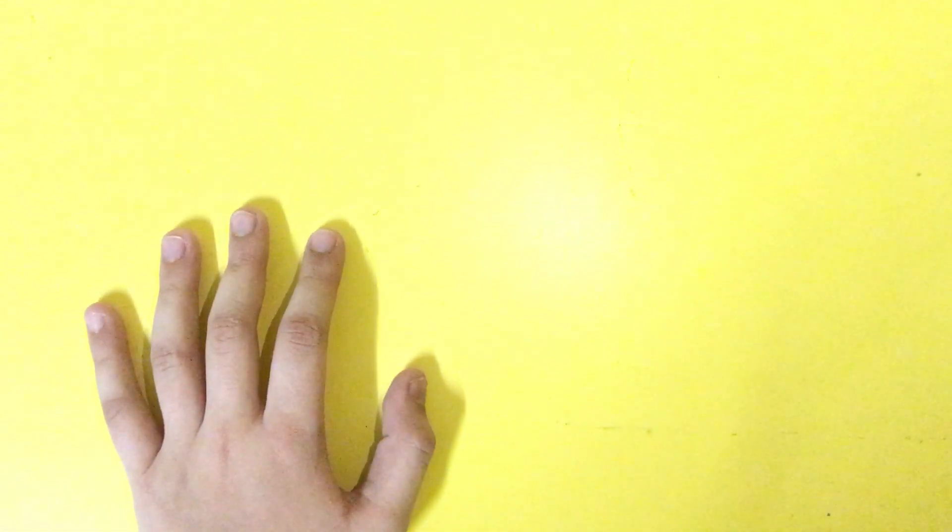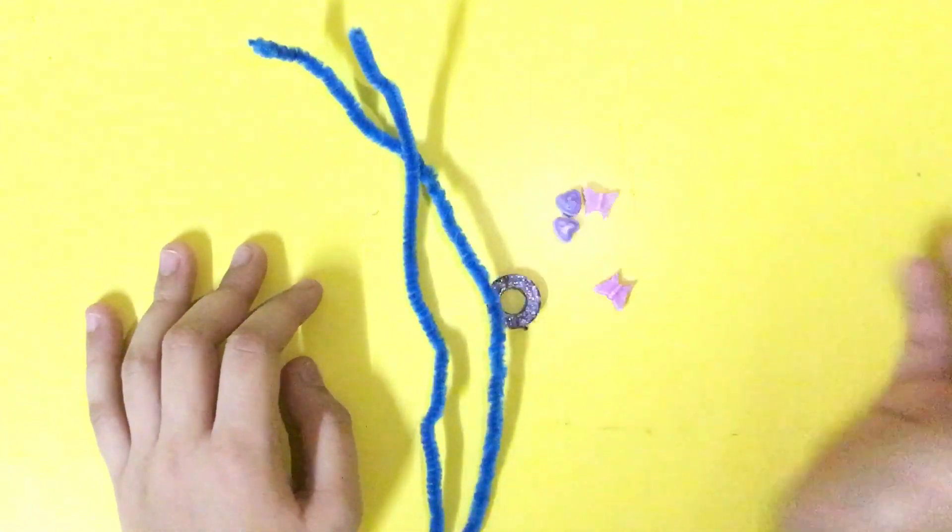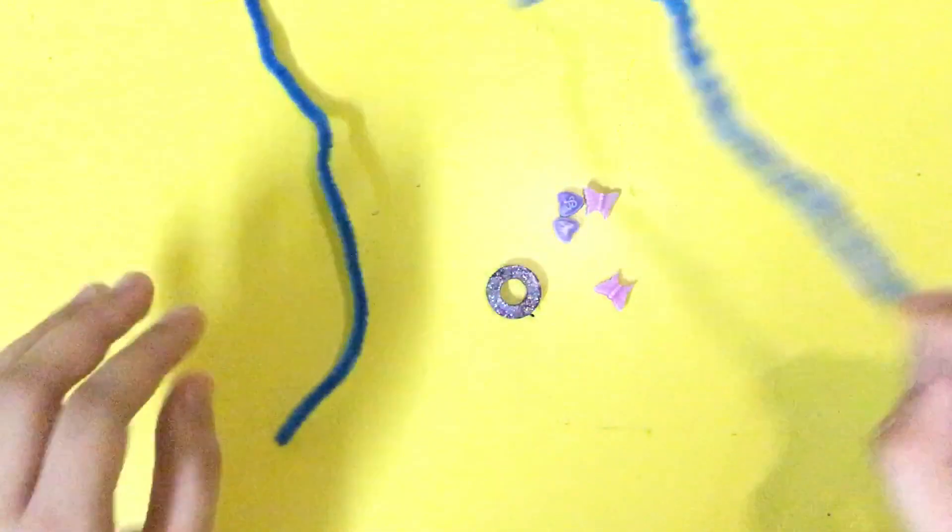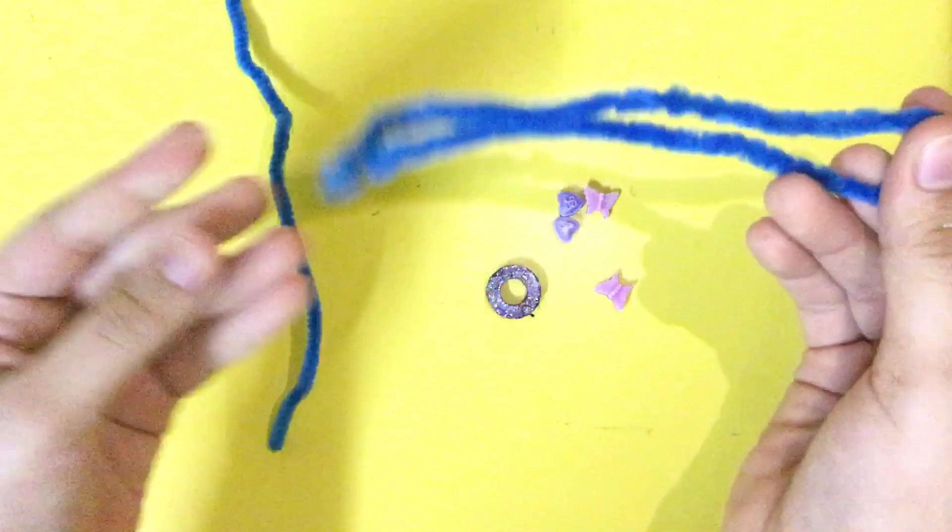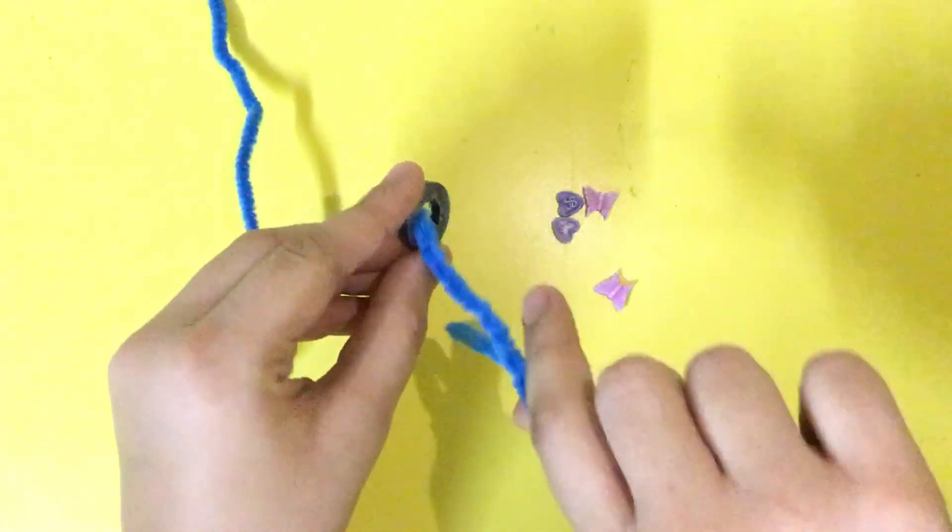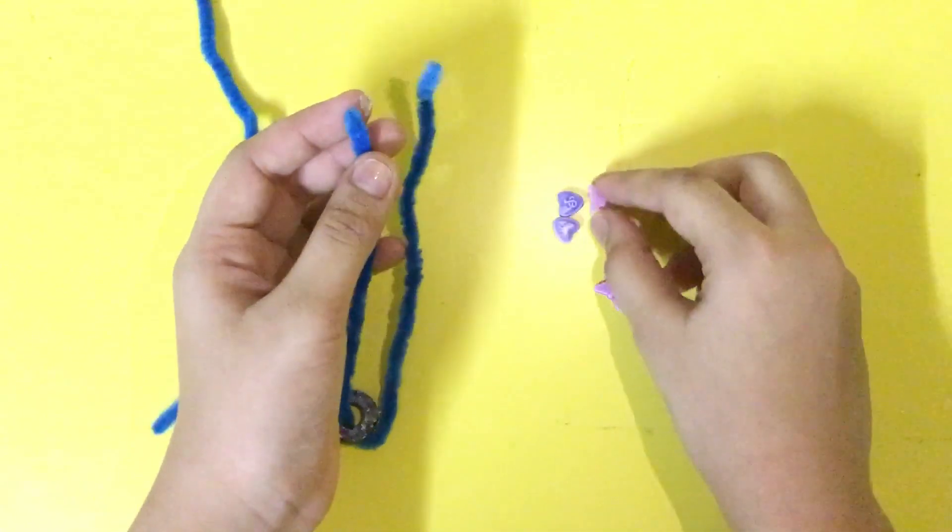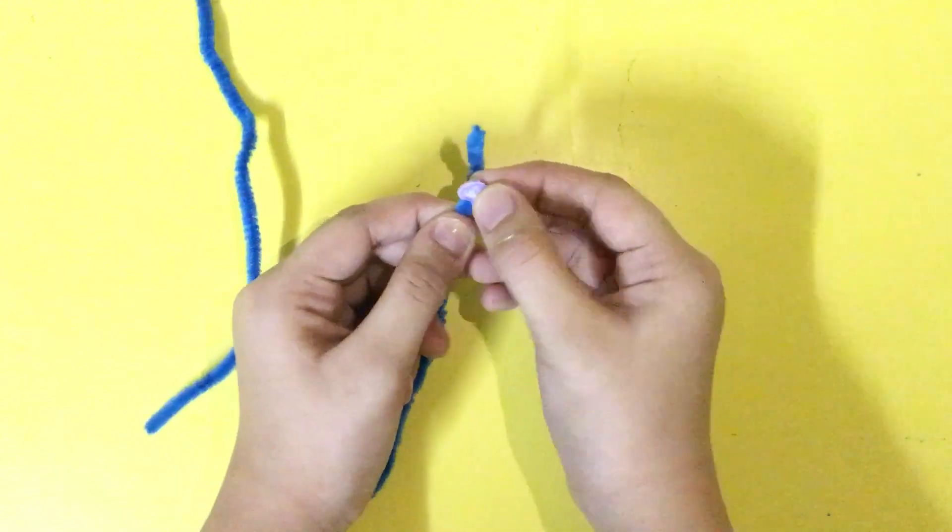For the second bracelet, we will need two pipe cleaners, one washer, and some charms. First we are going to take one pipe cleaner and fold it in half and put it in one end of the washer. Then I am going to add charms—first I'm going to add the heart charm.